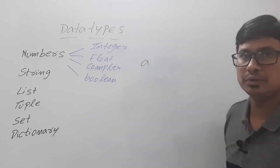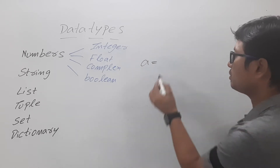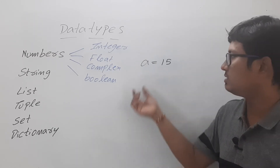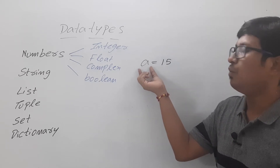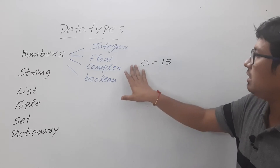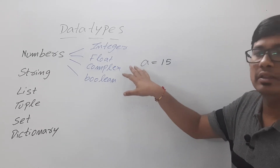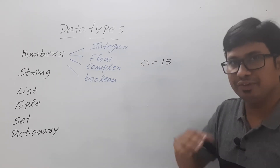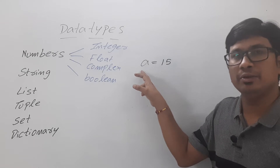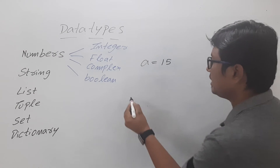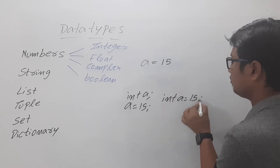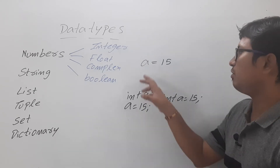Suppose if you want to assign an integer value to the variable a, then you can write a = 15. Now Python is dynamically typed, meaning once you initialize the value to the variable during runtime it will specify what data type it is. It is not statically typed, meaning during compile time the user does not need to specify the data type of the variable. In C, we need to first declare the variable — for example, int a = 15 — but in Python we can directly initialize the value to the variable.